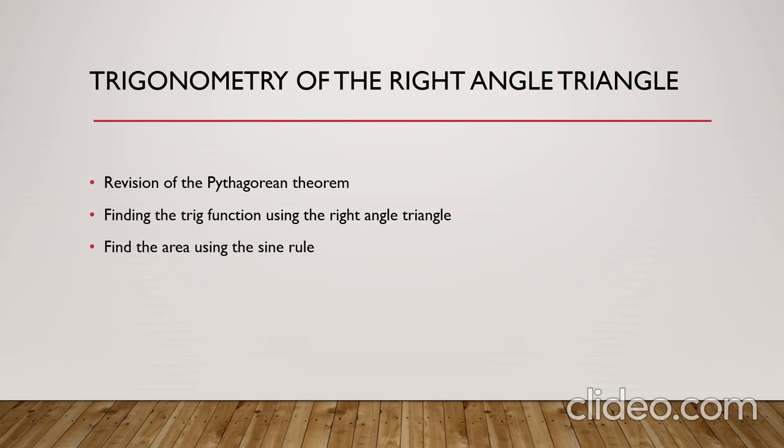After that we will talk about how to solve a right angle triangle using either Pythagorean theorem or the trigonometric functions, which depends on the question. For example, if we know one of the sides with this angle, we will use the trigonometric function in order to solve the right angle triangle. By saying solving a right angle triangle, it means that we want to find all the missing values in this triangle, from angles and from sides.